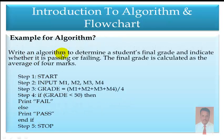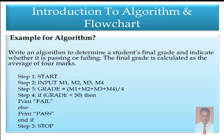Now write an algorithm to determine the student's final grade and indicate whether it is passing or failing. The final grade is calculated as the average of four marks. Step 1: Start. Step 2: Accept four inputs — Mark1, Mark2, Mark3, Mark4. Step 3: Grade = (M1 + M2 + M3 + M4) / 4. Step 4: If Grade is less than 50, print Fail; else print Pass. End if. Step 5: Stop.